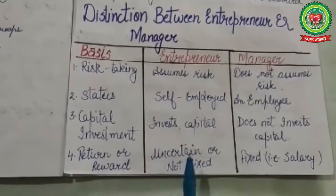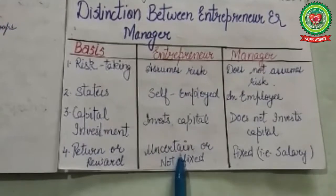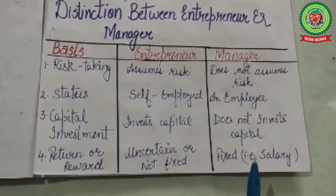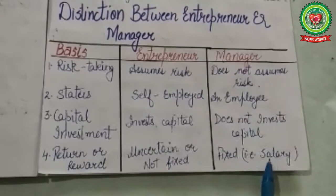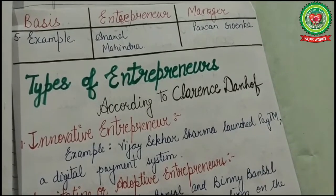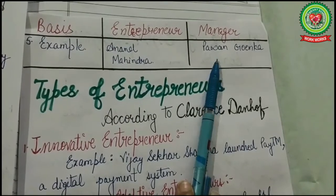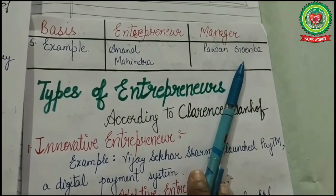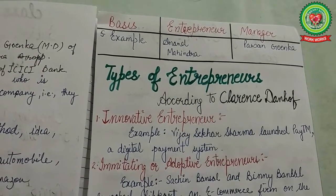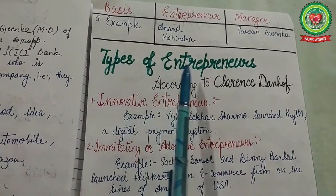The next difference is return or reward. For an entrepreneur, the reward is not fixed and is uncertain because it depends on the activities of the business. For a manager, the reward is fixed in the form of salary. For example, Anand Mahindra is the owner of Mahindra and Mahindra Group (entrepreneur), while Pawan Goenka, managing director, is the manager. These are the key distinctions between entrepreneur and manager.